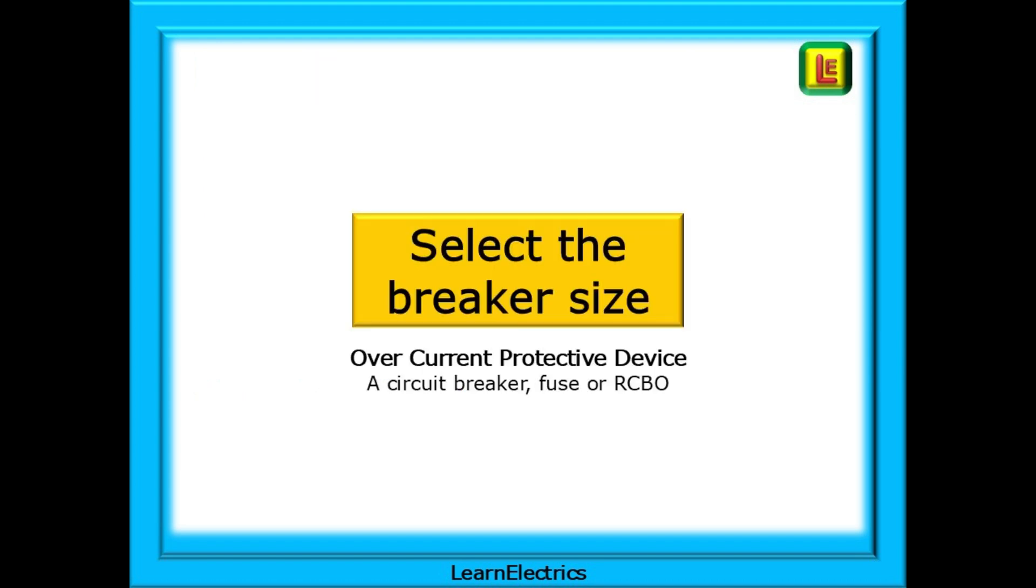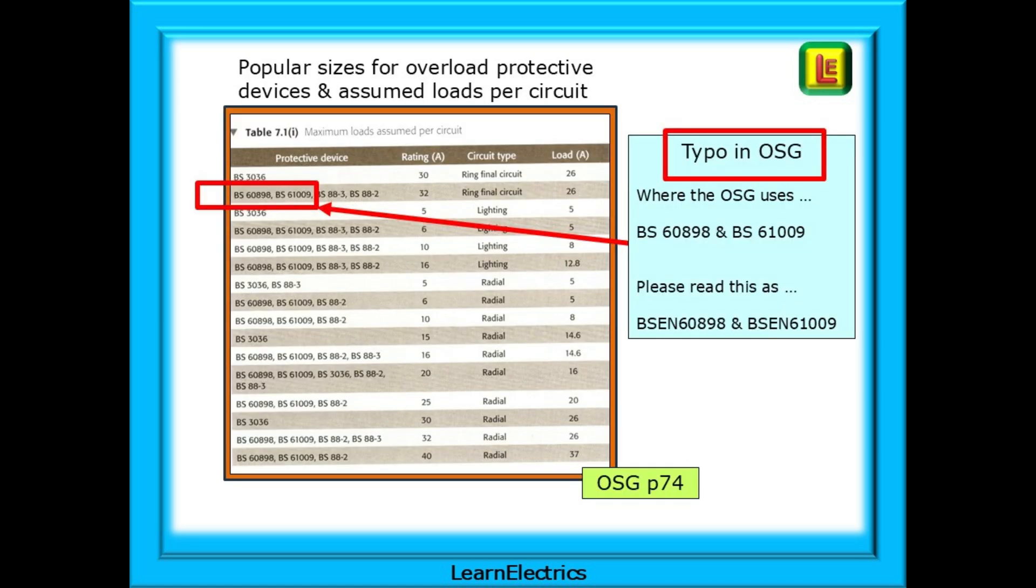We know IB, 20 amps, so now we can select the most appropriate breaker size. And this can be any overcurrent protective device, a circuit breaker, fuse or an RCBO. Before we move on, check page 74 of your on-site guide. Some books will show a typo where the on-site guide uses BS 60898 and BS 61009.